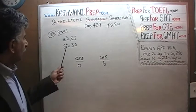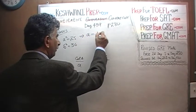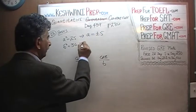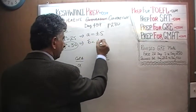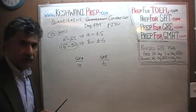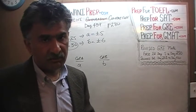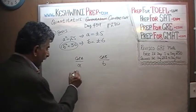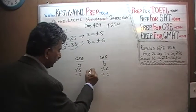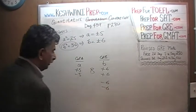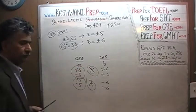We are told that a squared equals 25. That implies that a has to be either positive 5 or negative 5. Similarly, since b squared equals 36, that implies that b would have to be either positive 6 or negative 6. The problem is that we do not know which one it is. Maybe a is positive 5, maybe a is negative 5, maybe b is positive 6, maybe b is negative 6. For example, if a is positive 5 and b is positive 6, or if a is negative 5 and b is positive 6, the answer would be b. But if b happens to be negative 6, the answer would be a. The answer is D.